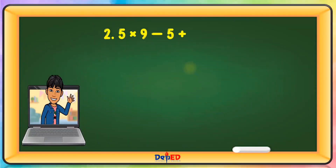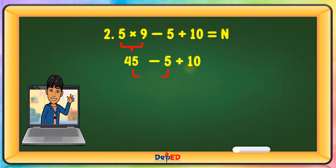Next problem: 5 × 9 − 5 + 10 = N. Let us first multiply: 5 × 9 = 45. Then subtract: 45 − 5 = 40. Then 40 + 10 = 50. N is equal to 50.